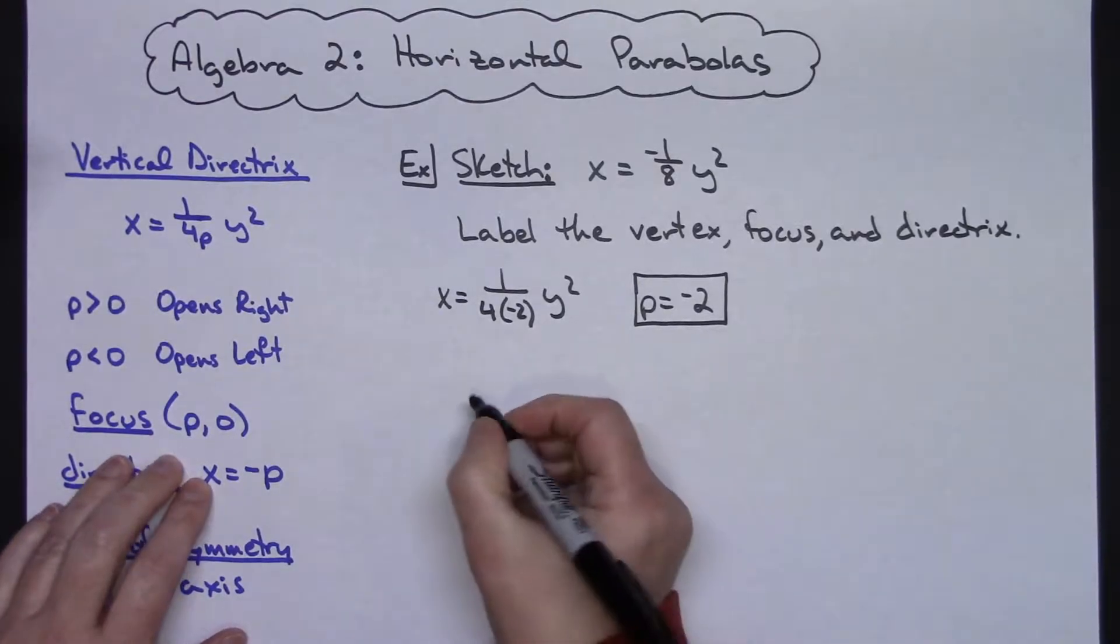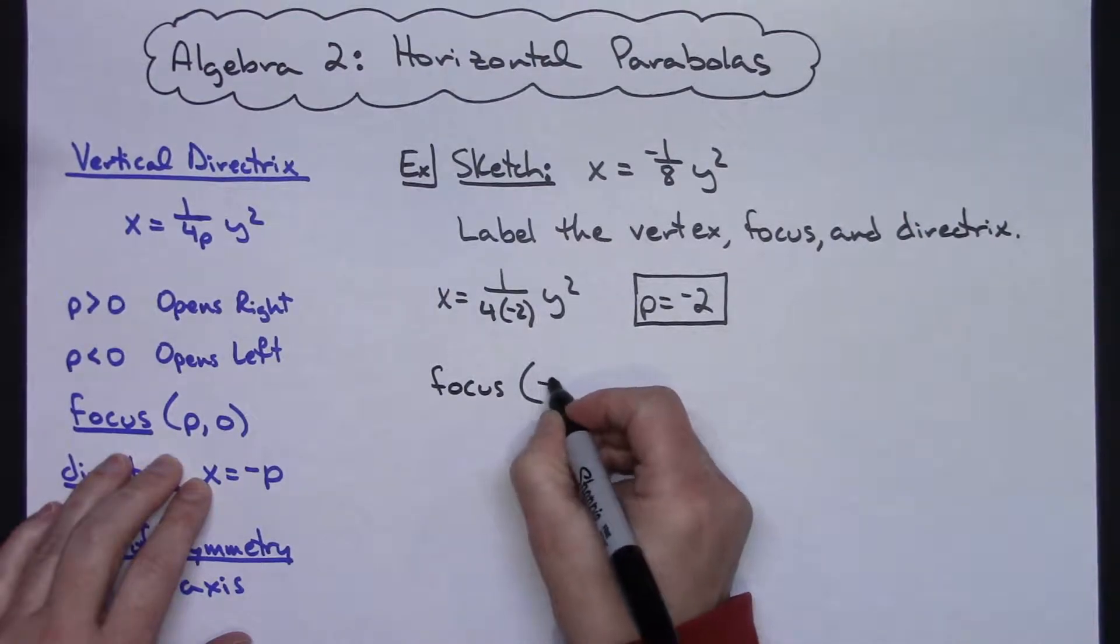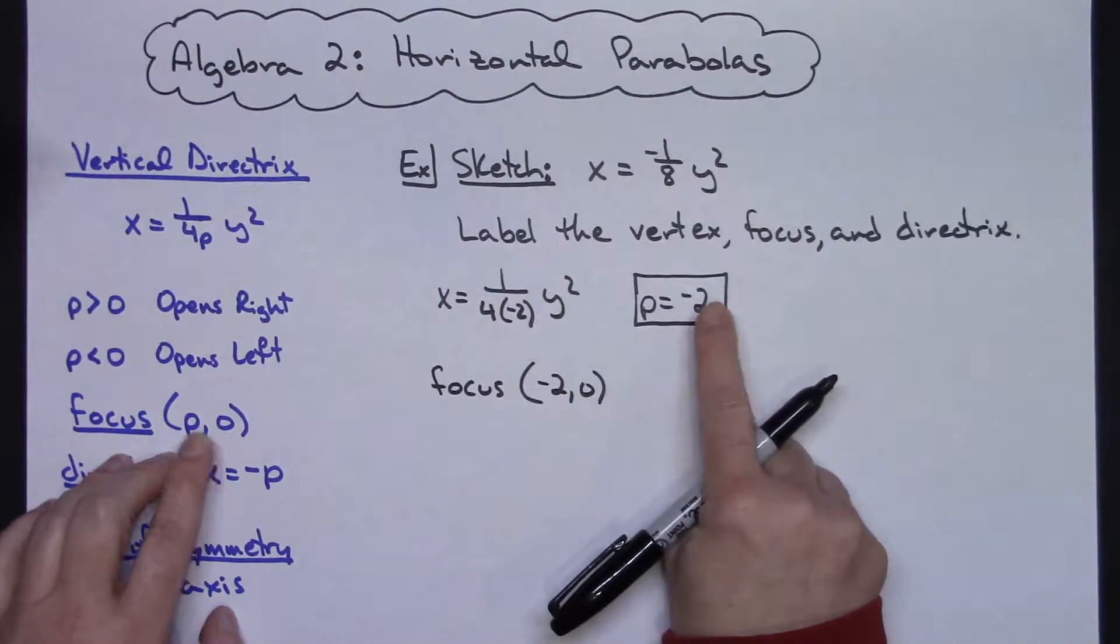Let's go ahead and write our focus down. Our focus is going to be negative 2, 0 because all I have to do is replace p.